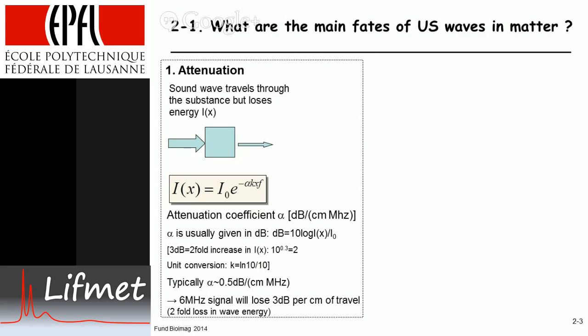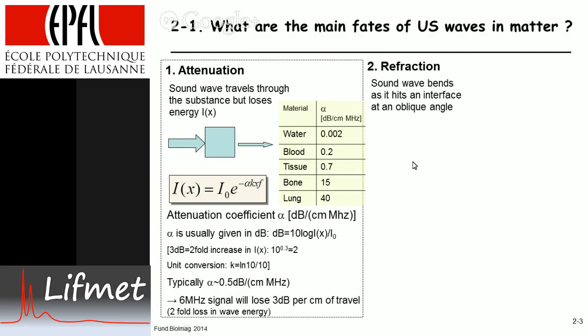Here are some attenuation coefficients for different materials. Water: very weak, 0.002. Blood: 0.2. Tissue: 0.7 in this example. Bone: much higher at 15. And in the lung, it's 40, so very high attenuation. The second fate is refraction.